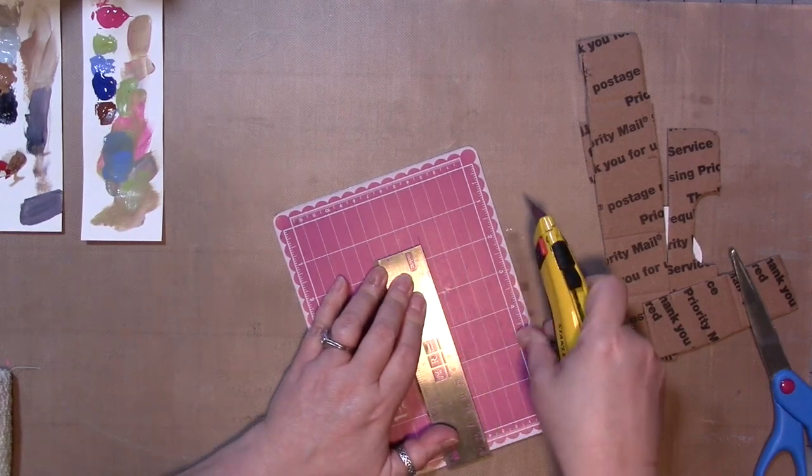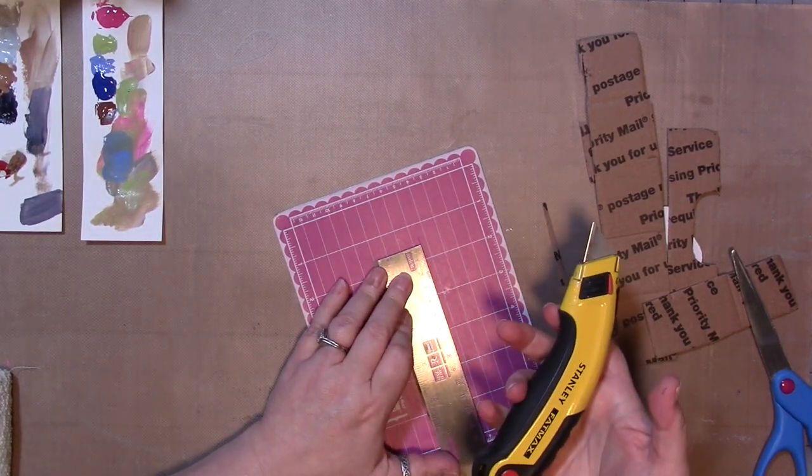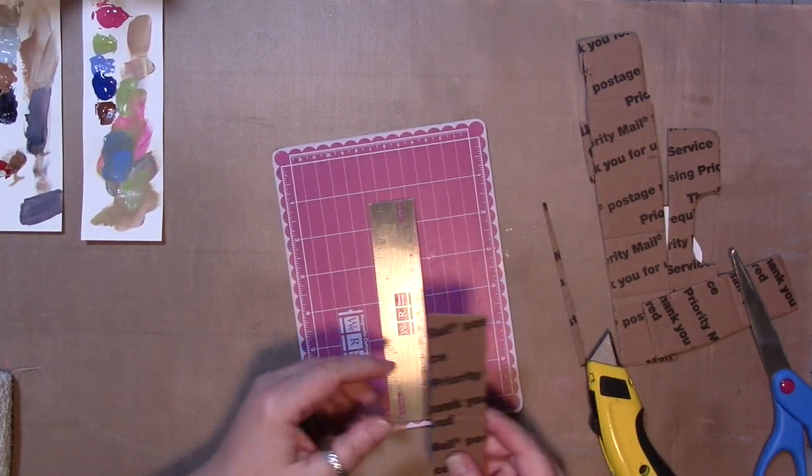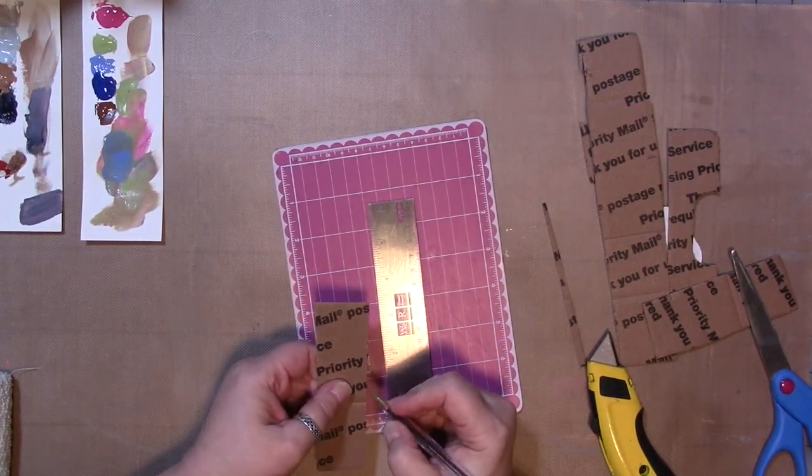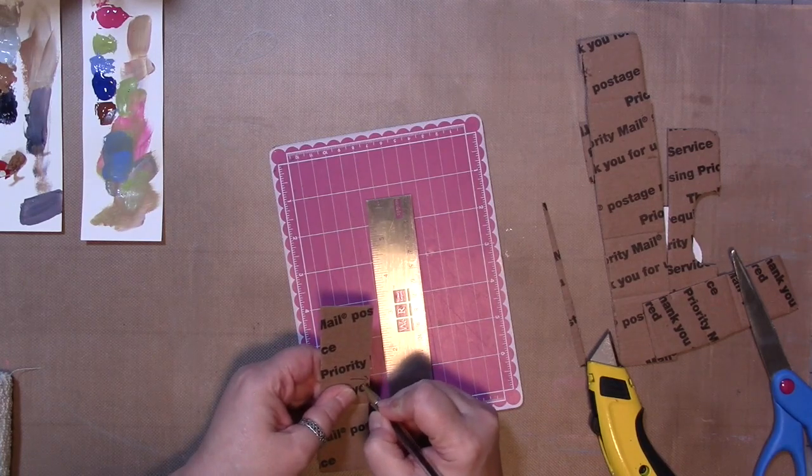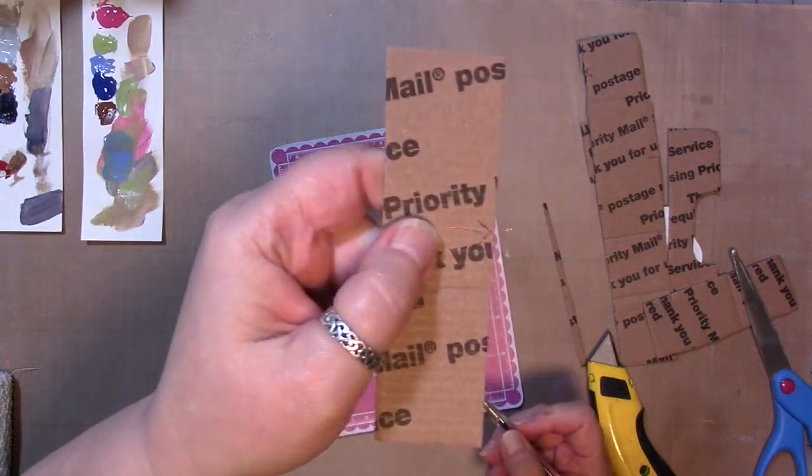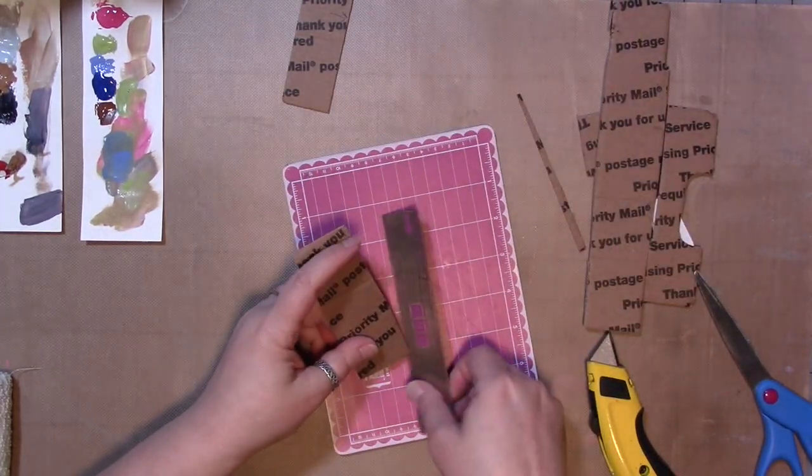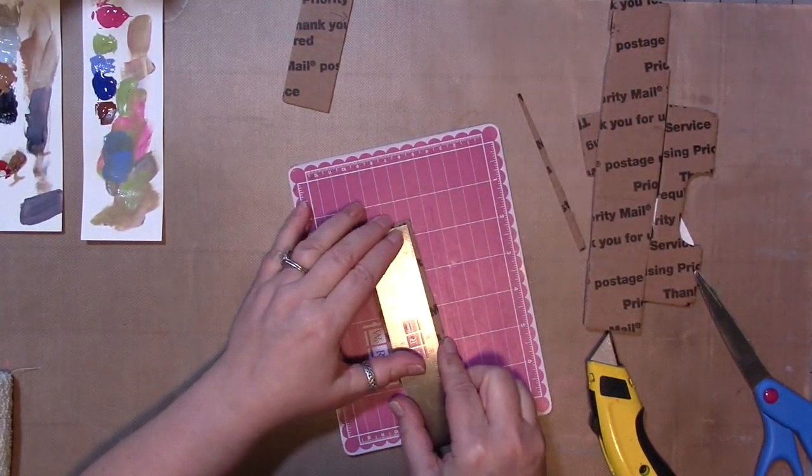So I have a mini cutting mat, a metal ruler, and a box cutter, and this is by We Are Memory Keepers. I'm going to draw an arrow like that for the edge that's straight, because that's going to be important.